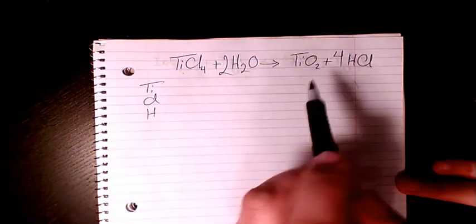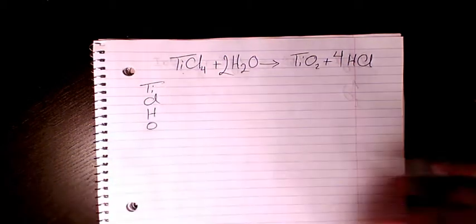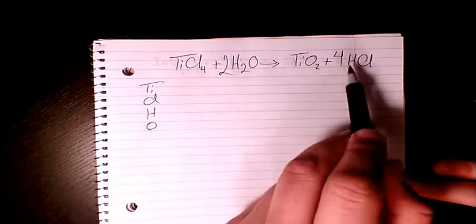What else is remaining? Remaining oxygen. Two in this side and two in this side. So oxygen is balanced as well. So we have two here and four here.